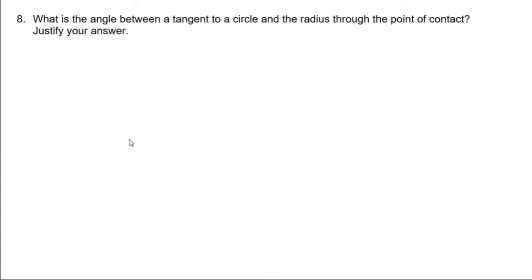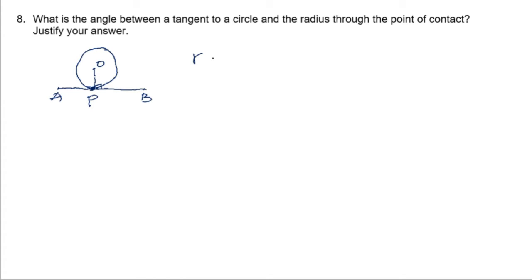Question number 8: What is the angle between the tangent to a circle and the radius through the point of contact? We know that a tangent touches the circle at only one point. If AB is the tangent, O is the center of the circle, and P is the point of contact, then the radius OP will be perpendicular to the tangent. Therefore the angle between the tangent and the radius through the point of contact is 90 degrees — angle OPB is 90 degrees, a right angle is formed.